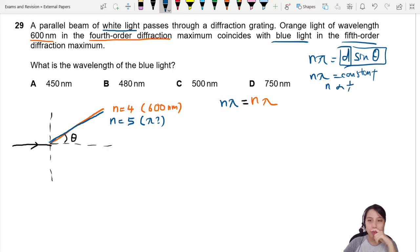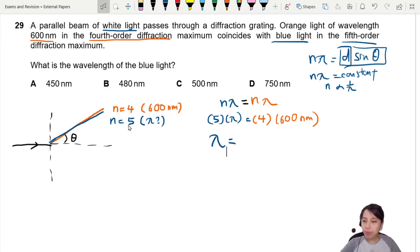So we plug in all the values that we know. n of 5 of blue with I don't know what wavelength equals to the orange color fourth order and at 600, we can keep nanometers right? Yeah I can, this one is in ratio so it's okay nanometers. This will give us a lambda of 480 nanometers. Best choice, I think B is the best choice.